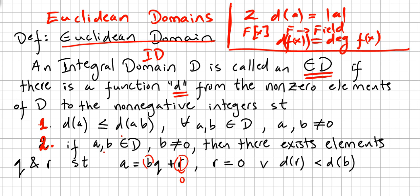The second condition: if a and b are in the domain and b is not zero, then there exist elements q and r such that a equals bq plus r, where either r equals zero or d(r) is less than d(b). This is the concept of Euclidean domain.